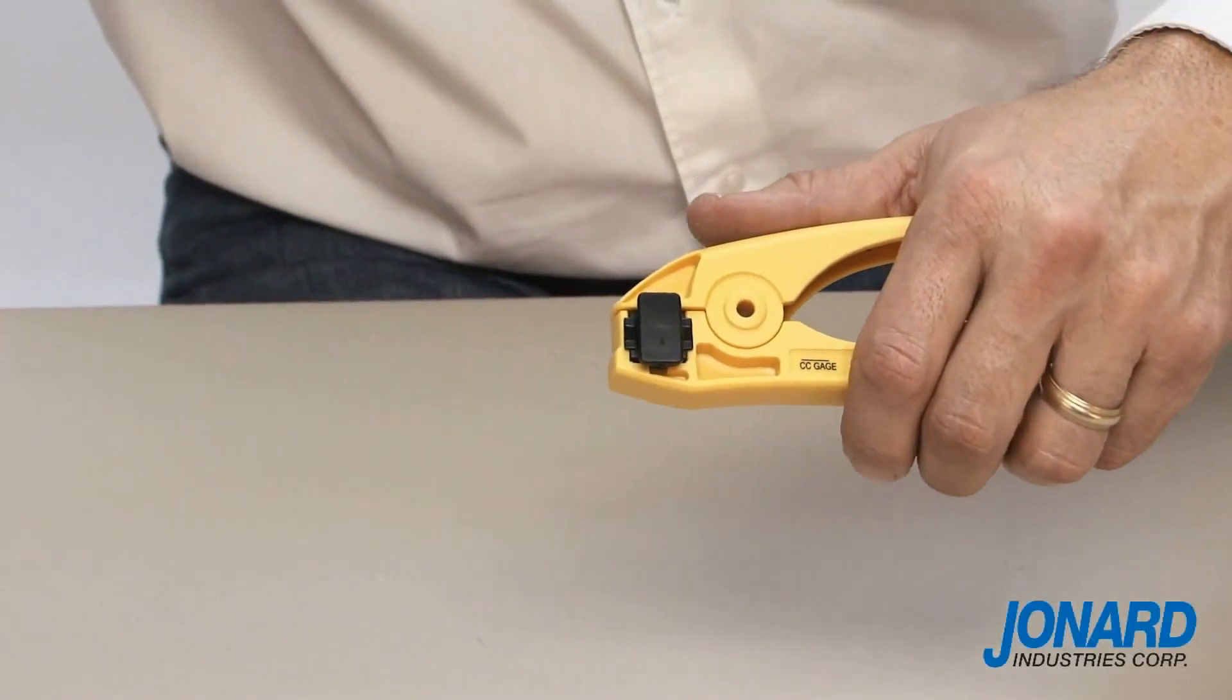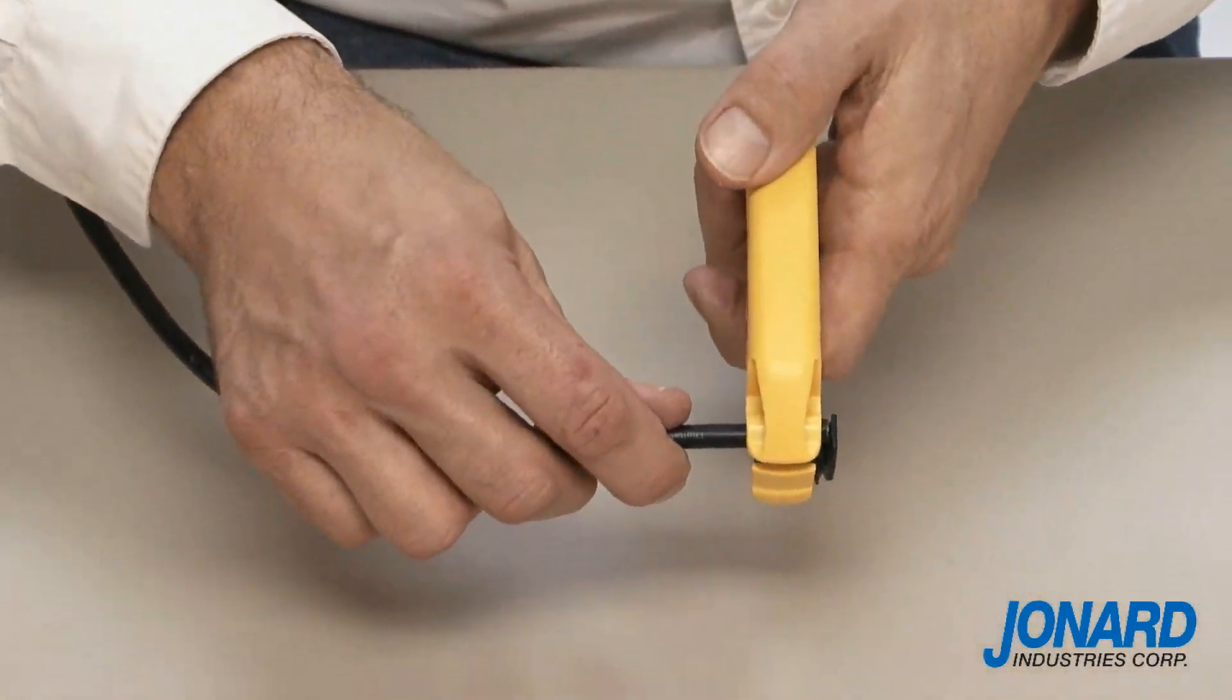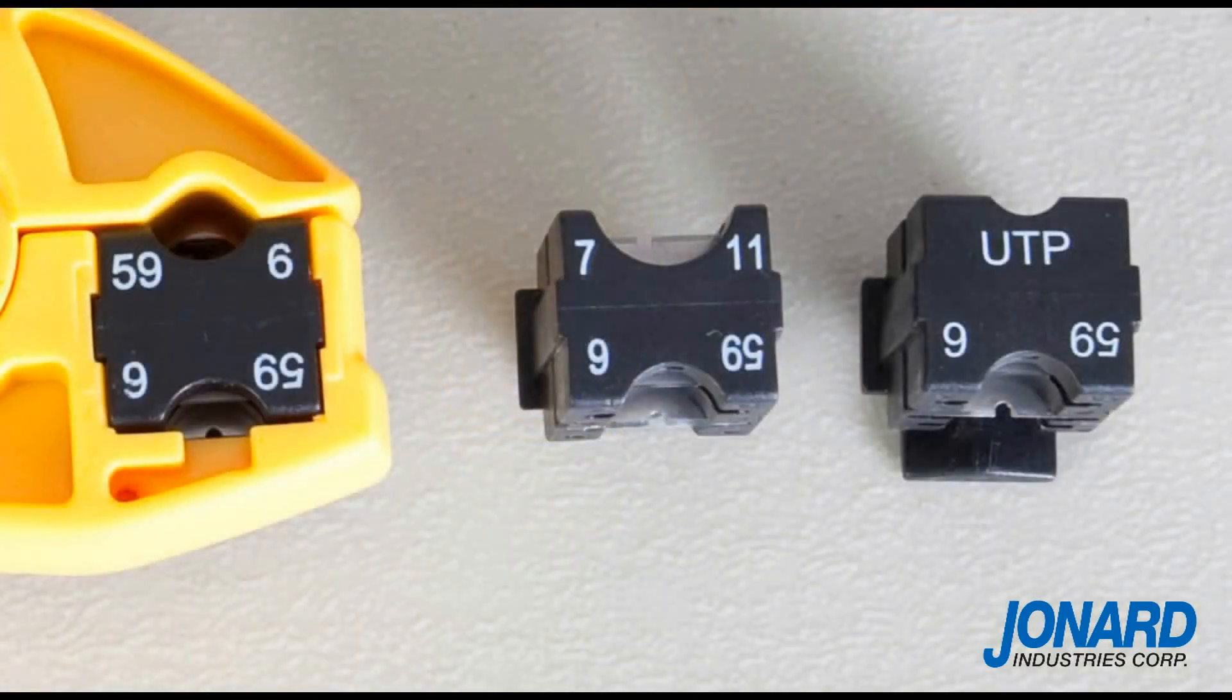To use a UST100 series tool, place the cable in the end of the tool. Make note of the stop or stop marker indicating how much cable to insert into the tool. The UTP cartridge is the one exception. It does not have a stop for CAT cables.